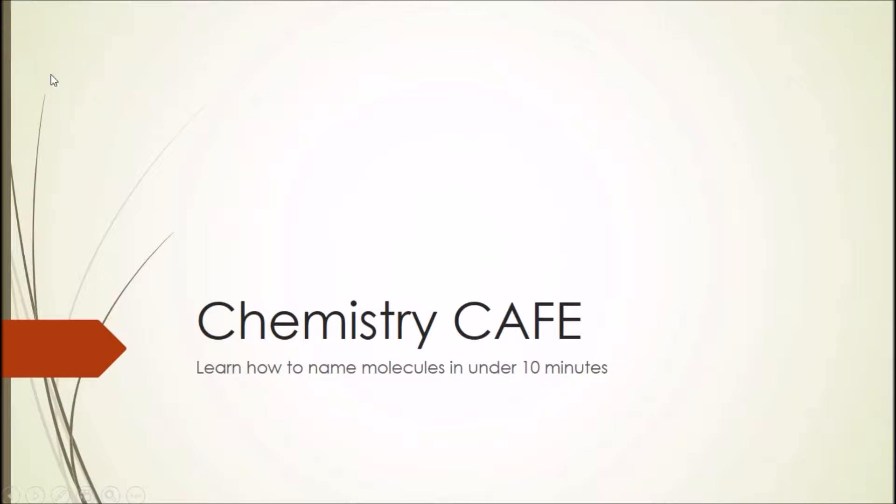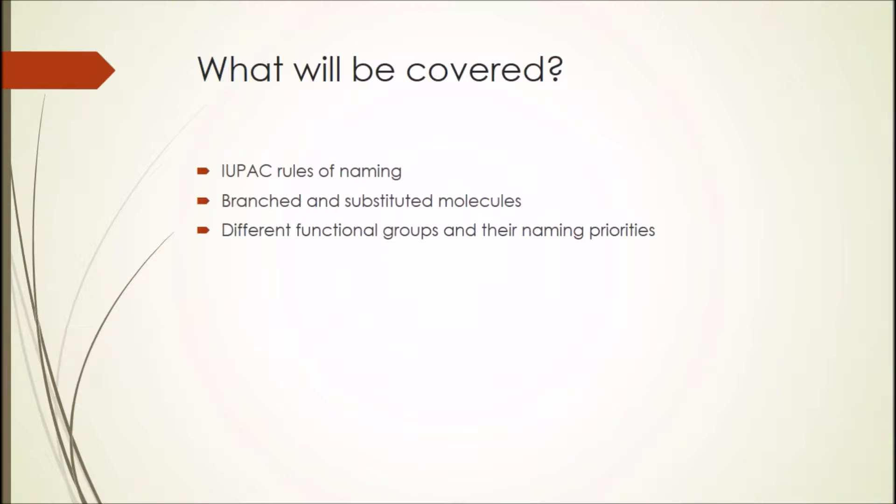Hopefully you find this whistle stop tour useful and can use it to help with your studies, especially those studying A level and first year undergraduate level. This video will cover some of the IUPAC rules of naming and will give you an idea of how to name straight and branch chain molecules which may or may not have substituted functional groups. You will also learn what happens when there is more than one functional group present and which takes priority.